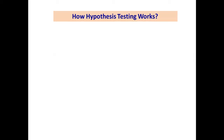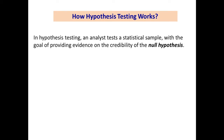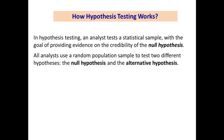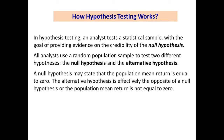In hypothesis testing, an analyst tests a statistical sample with the goal of providing evidence on the credibility of the null hypothesis. All analysts use a random population sample to test two different hypotheses: the null hypothesis and the alternate hypothesis. The null hypothesis is usually a hypothesis of equality between population parameters — for example, a null hypothesis may state that the population mean return is equal to zero. The alternate hypothesis is effectively the opposite of the null hypothesis; for example, the population mean return is not equal to zero. Therefore, they are mutually exclusive and only one of them can be true. However, one of the two hypotheses will always be true.